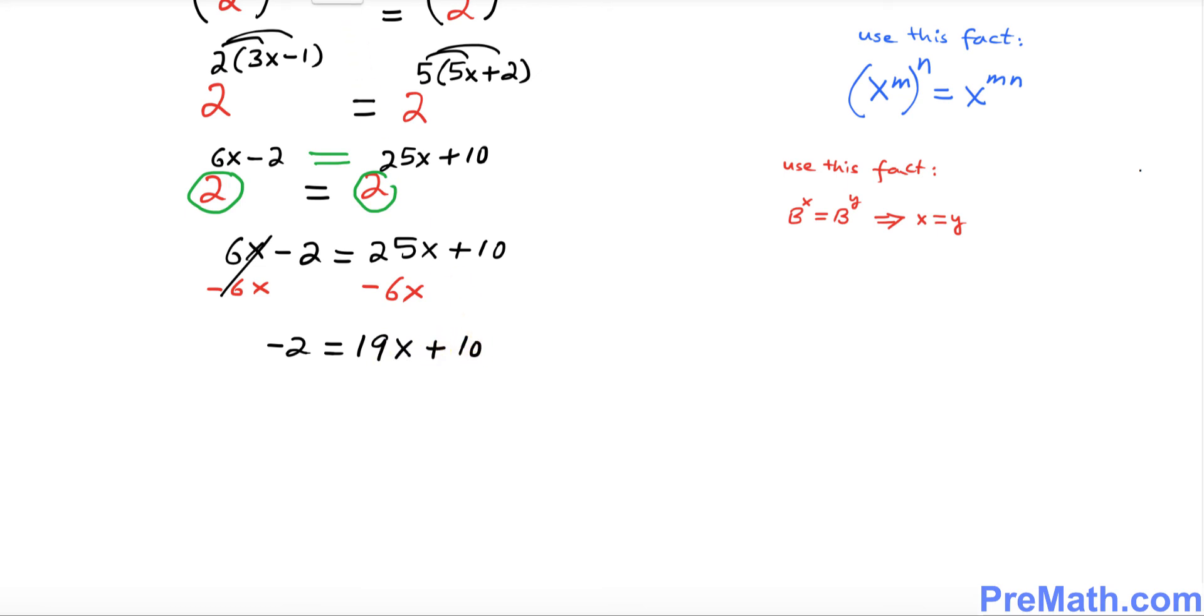Now we'll subtract 10 to isolate x. This gives us 19x equals negative 12.